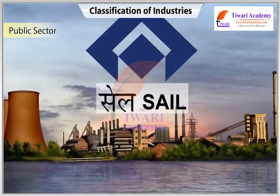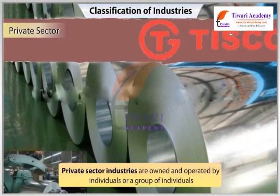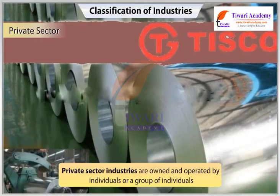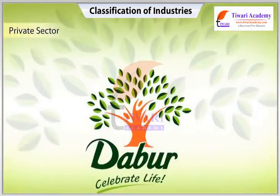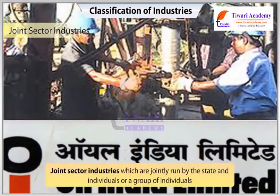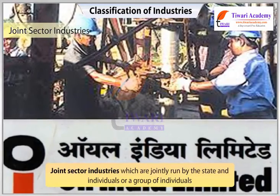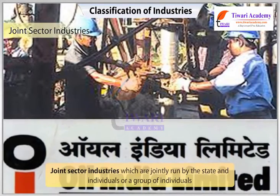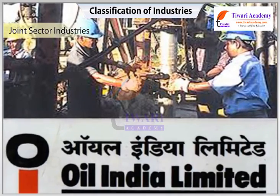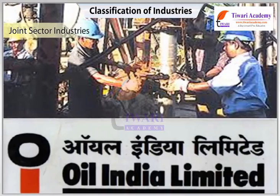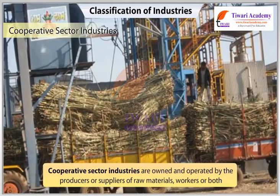On the basis of ownership: Public sector industries are owned and operated by government agencies such as SAIL, etc. Private sector industries are owned and operated by individuals or a group of individuals — for example, DISCO, Bajaj Auto Limited, and TATA Industries. Joint sector industries are jointly run by the state and individuals, such as Oil India Limited, which is jointly owned by public and private sectors.